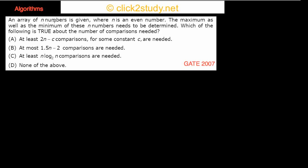The question is: an array of n numbers is given where n is an even number. The maximum as well as the minimum of these n numbers needs to be determined. Which of the following is true about the number of comparisons needed? The options use language like 'at least these many comparisons' or 'at most these many comparisons'.